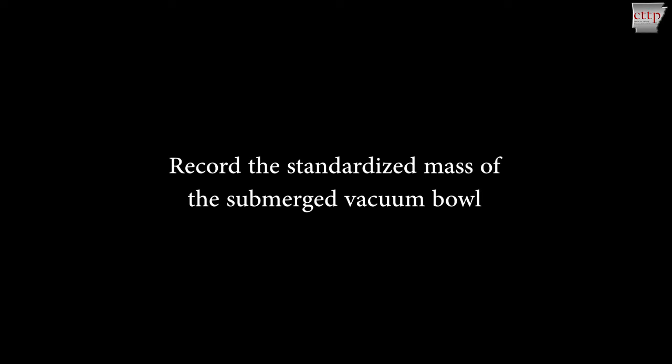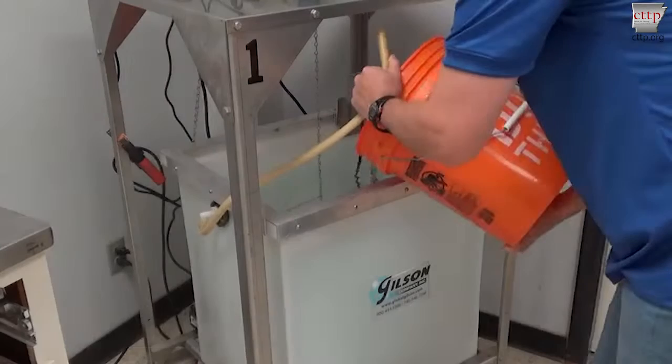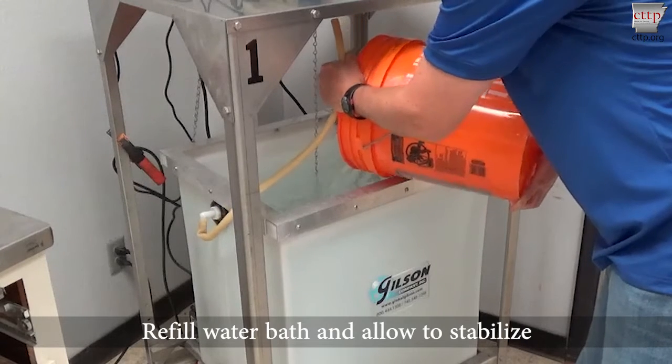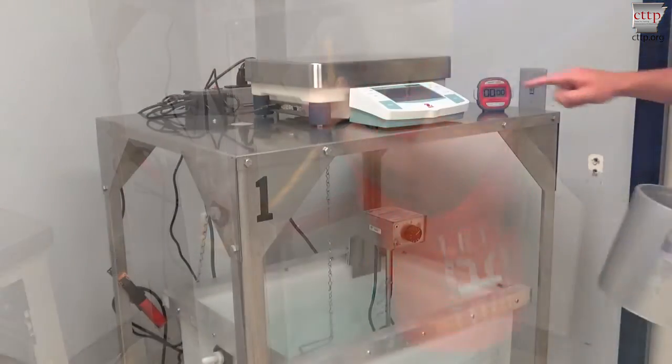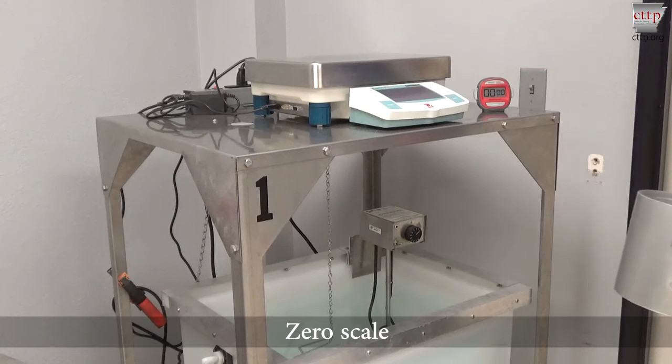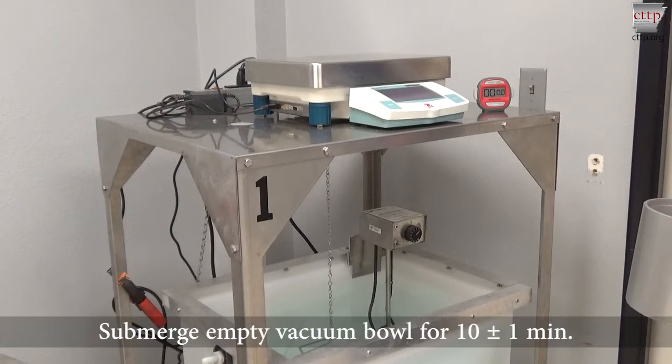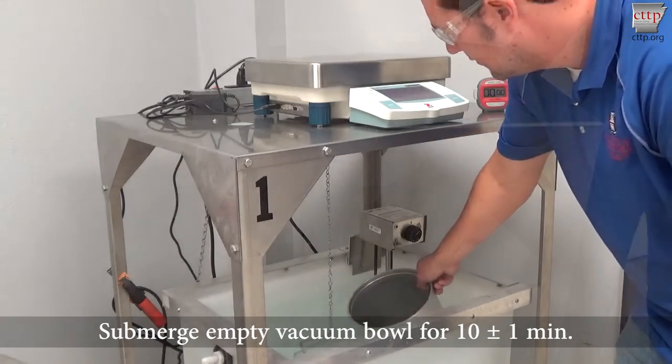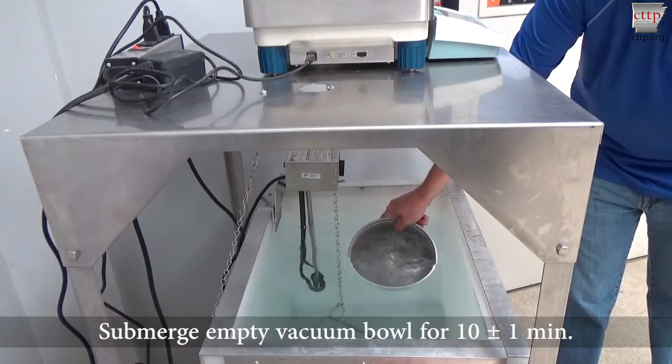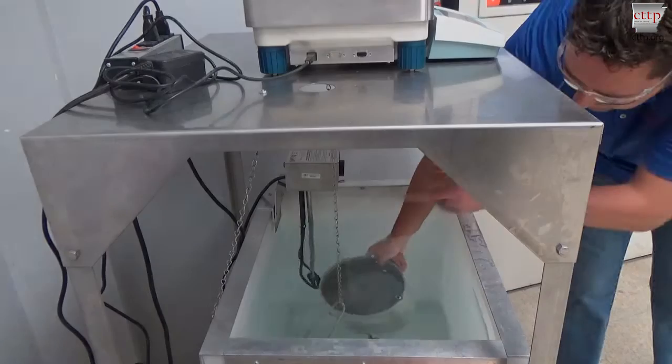To check the standardized mass of the submerged vacuum bowl, refill the water bath to overflowing and allow the water level to stabilize. Zero the scale. Submerge the empty vacuum bowl in the water bath for 10 minutes. Record the submerged mass of the empty vacuum bowl.